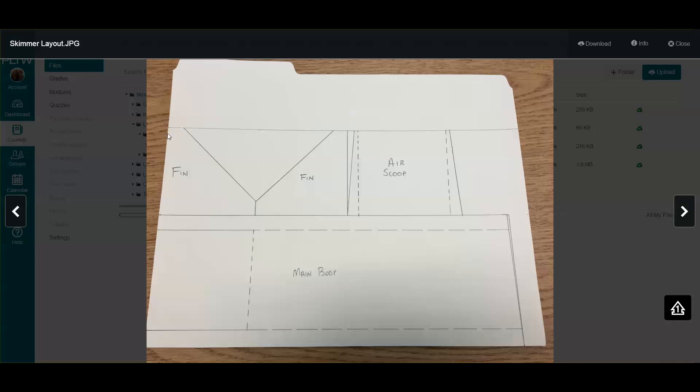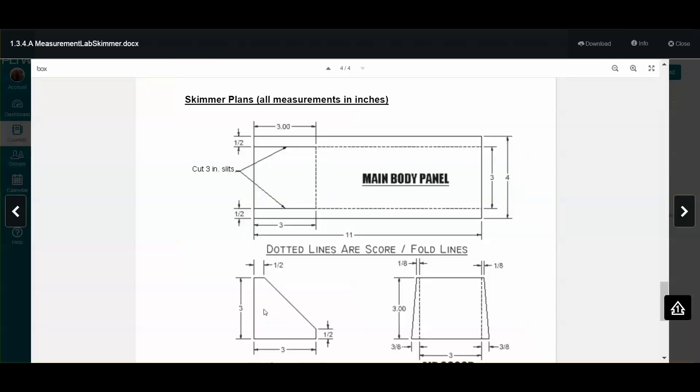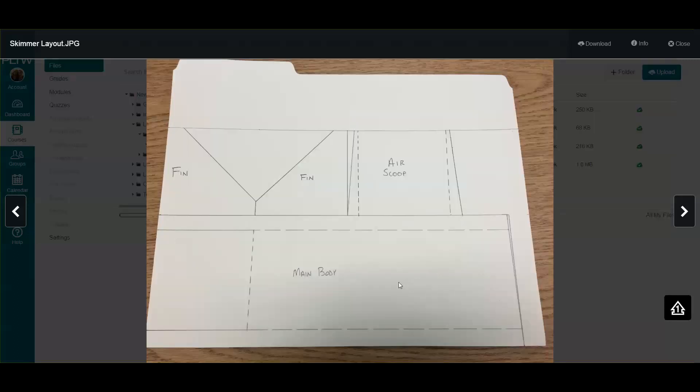The folder I just showed you—if you use all of these, you have one main body, two fins, and one air scoop. You need each one of these for a successful skimmer.